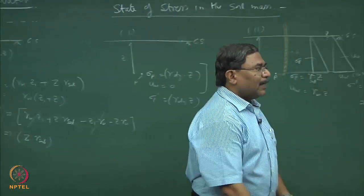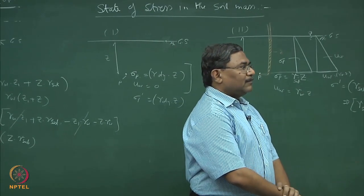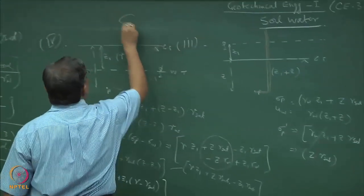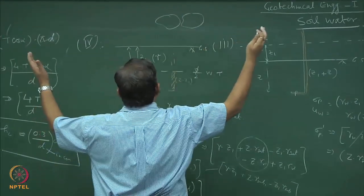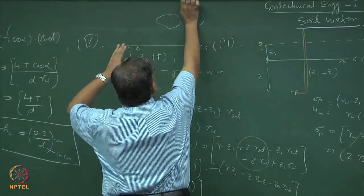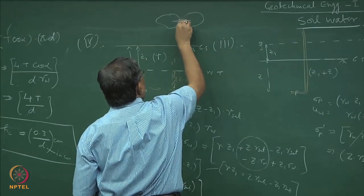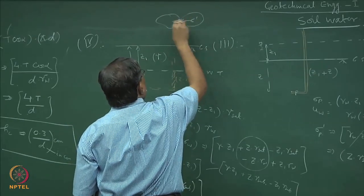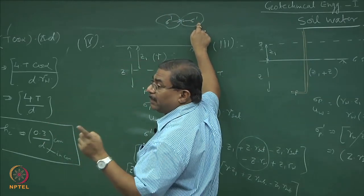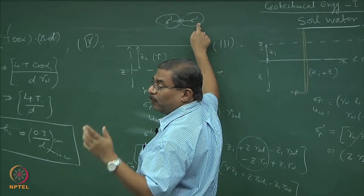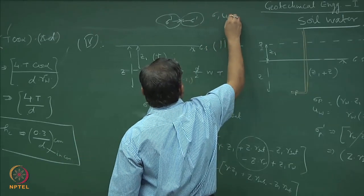If effective stresses increased at a given point — think of the Calcutta metro tunneling — the grain and grain are brought close together because of the thin film of water and surface tension, and that is your σ'. Sigma prime cannot be measured; there is no way. Sigma can be measured and u_w can be measured.